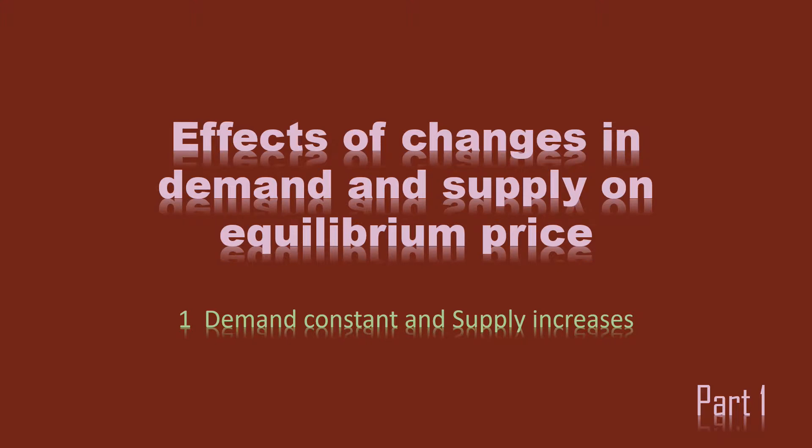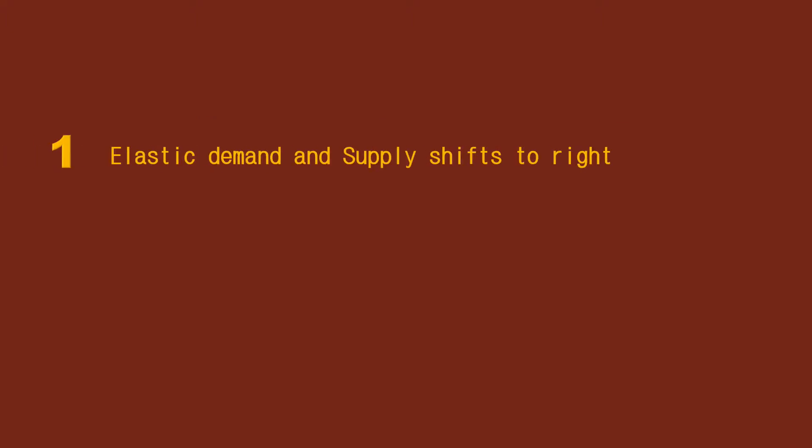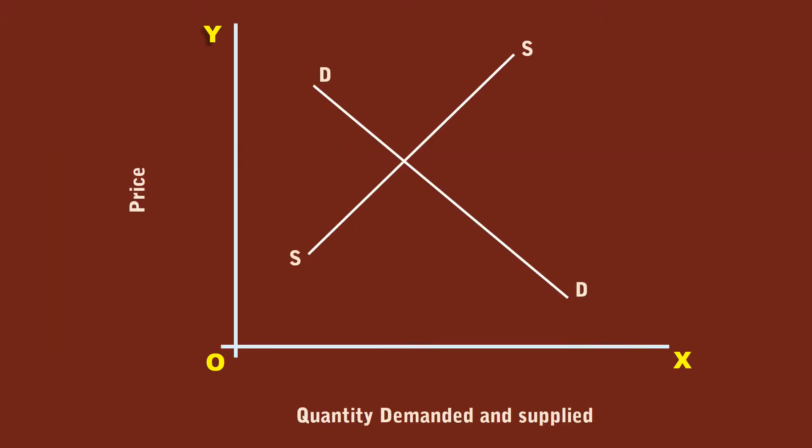This occurrence we are going to analyze under three conditions. First condition, demand is elastic and supply shifts to the right. DD and SS are respectively the original demand and supply curves. E1 is the equilibrium point. P2 is the equilibrium price. M1 is the equilibrium quantity demanded and supplied. With an improvement in technology, the producers supply more. The supply curve shifts to the right. S1, S1 is the new supply curve.